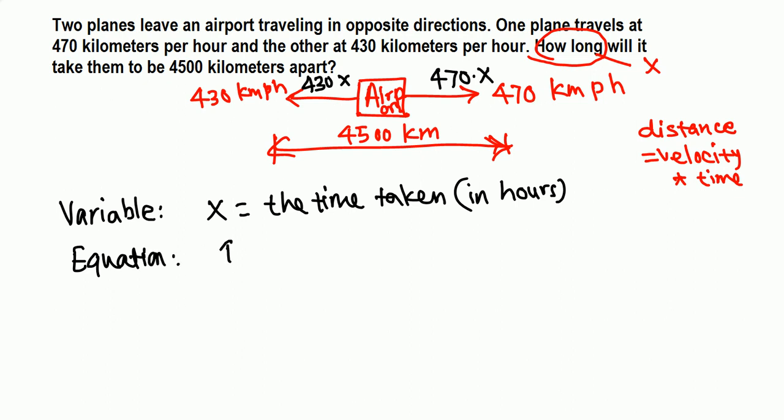So 470, going at the rate of 470, so the distance traveled is 470x. Going at the rate of 430, so the distance traveled is 430x, and the total distance is 4500.